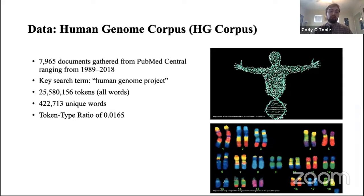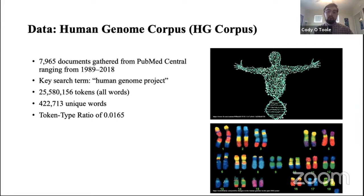We gathered 7,965 documents from PubMed Central ranging from 1989 to 2018 — a 30-year period — using the key search term 'human genome project.' Overall we have 25 million tokens, 422,000 unique words, and a token-type ratio of 0.0165. This low value indicates the corpus is lexically undiverse — the closer to one, the more diverse. This is likely due to the solidified nature of the field: as the later years show many papers in a plateau-type growth, the field's ideas are more cohesive compared to the early years where many new ideas were emerging.